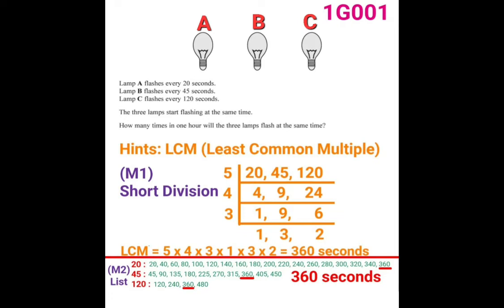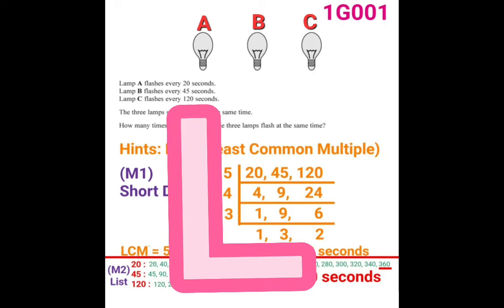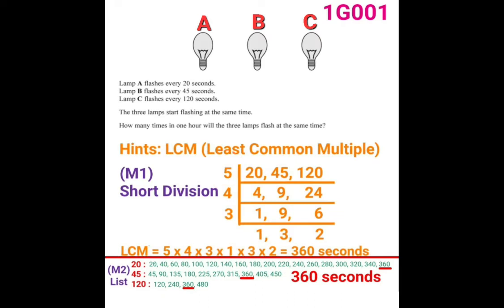To find the LCM, look at the steps on screen. There are six numbers in the L-shape outside the frame on the left-hand side. Read them from top to bottom: 5, 4, 3, 1, 3, and 2. Multiply these six numbers together: 5 times 4 times 3 times 1 times 3 times 2, and the answer is 360. That is method one.